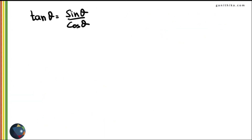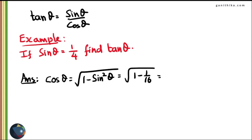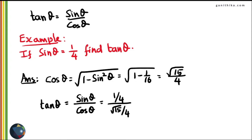Consider the identity tan θ = sin θ / cos θ. For example, if sin θ = 1/4, find tan θ. Since sin theta alone is not enough, first find cos θ using cos θ = √(1 - sin²θ), which gives √15 / 4. Then substitute into tan θ = sin θ / cos θ, giving tan θ = 1/√15.